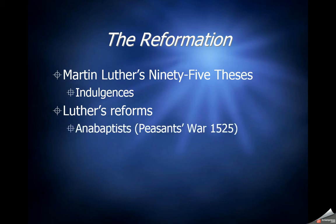Luther's reforms resulted in the birth of the Anabaptists. In the Peasant War of 1525, there was a widespread popular revolt in German-speaking areas of Central Europe. It failed because the Catholic Church and the aristocracy crushed it. Somewhere between 100,000 and 300,000 peasants were brutally killed during this revolt because they were not nearly as well armed as the armies of the aristocracy and the Catholic Church. It was one of the biggest tragedies in history.